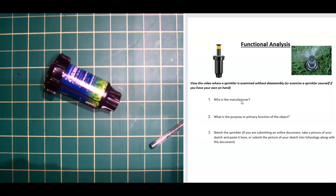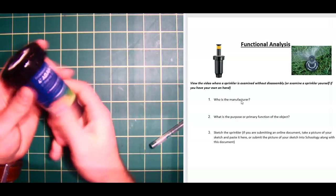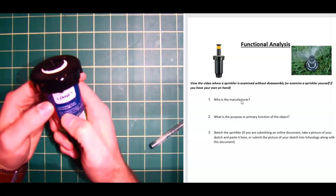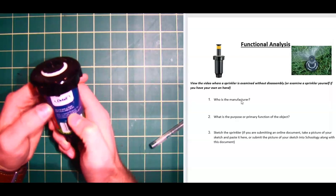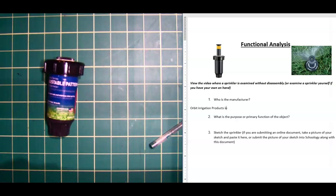And so if you looked, the first question is, who is the manufacturer? And if we take a look at this sticker on this sprinkler, you'll see that it's made by this company, Orbit Irrigation Products Incorporated. And so that's really easy to answer. We just type in Orbit Irrigation Products Incorporated.